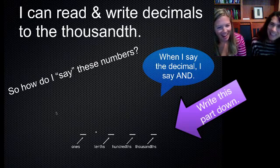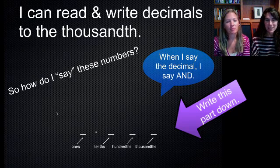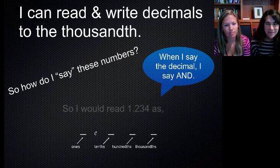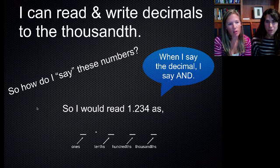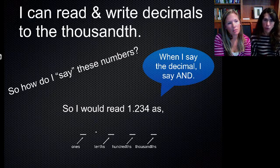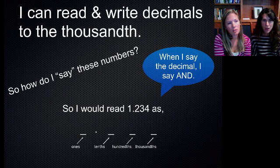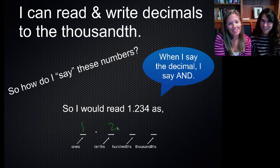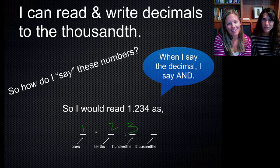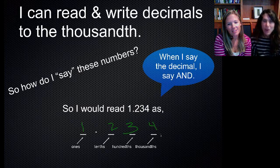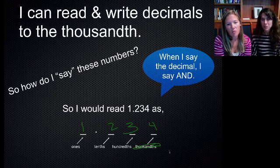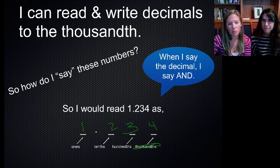We're not going to say 1.234 anymore. And this is the part that you want to write down. Just this little section right here that we're circling. Make sure you write that part down because we're going to be referencing that as we go through. When I say the decimal, this is where we get to say the word and instead of point. So instead of saying 1.234, we are going to say 1 and 234 thousandths.